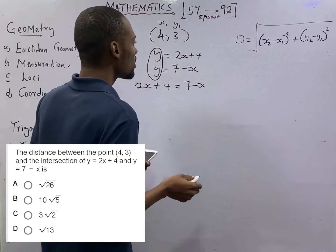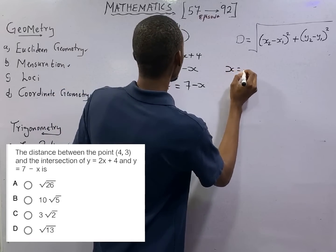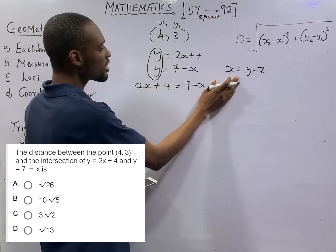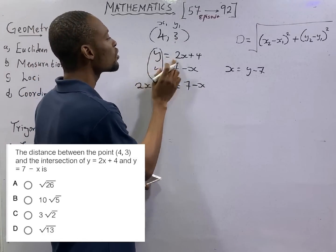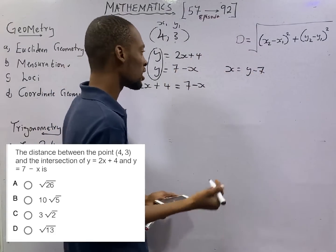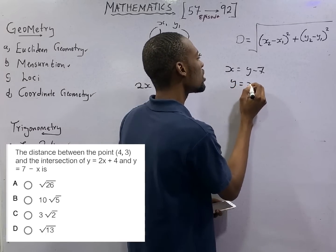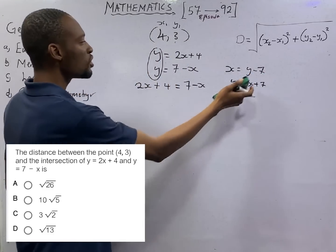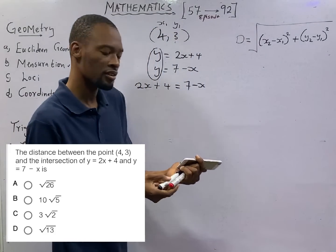In some cases, they will say the intersection of x equals y minus 7. They will give you here and they will give you this one. What you will simply do in that case is y equals 2x plus 4, then this second one, also make y subject of formula to get y equals x plus 7. After making y subject of formula, then you equate here and here. Anyhow they bring it, you should be very ready.